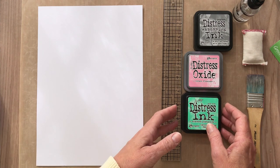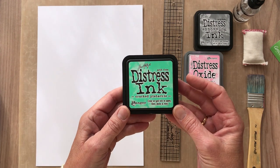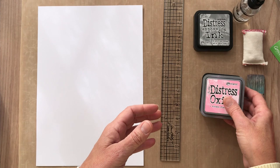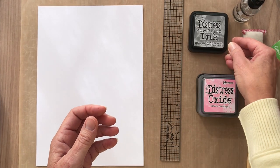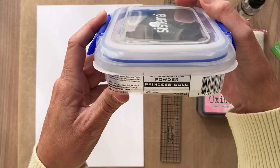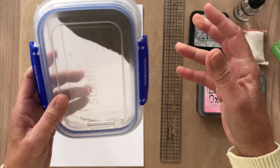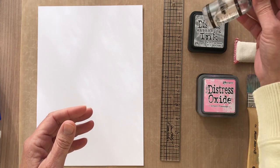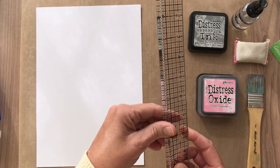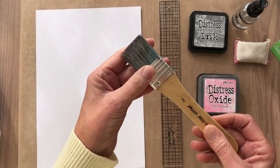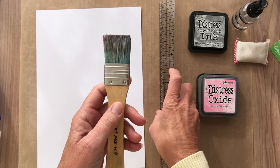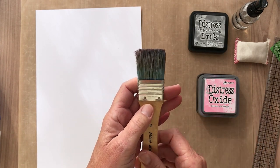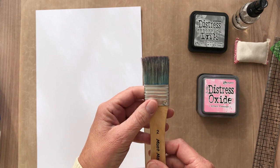You need very few things to do this. Just a couple of colors of your distress inks. Today I'm using Cracked Pistachio and the Distress Oxide in Kitsch Flamingo color. You'll also need some embossing ink, Ranger Princess Gold embossing powder, the little embossing buddy to wipe over our paper, some water, a plastic ruler, and a wide paintbrush. This one measures one and a quarter inches, about three centimeters.